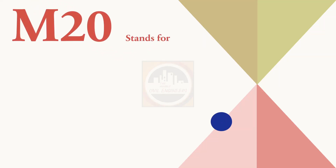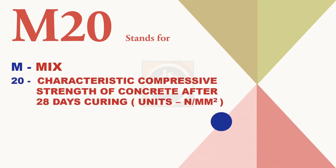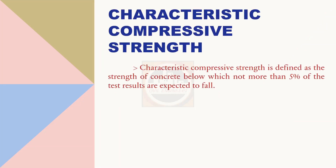First of all, what does M20 stand for? The answer is: M stands for mix, and the 20 means the characteristic compressive strength of concrete after 28 days of curing. Its units are Newton per mm square.